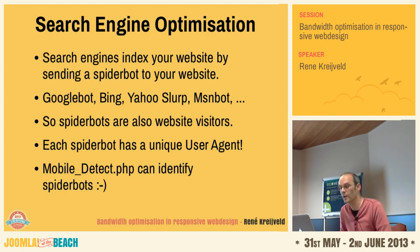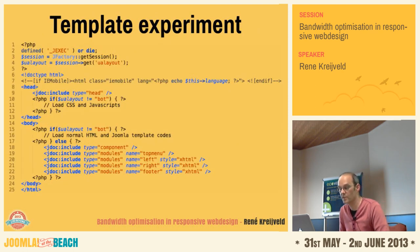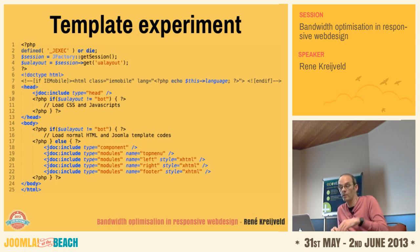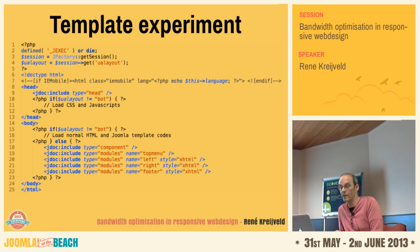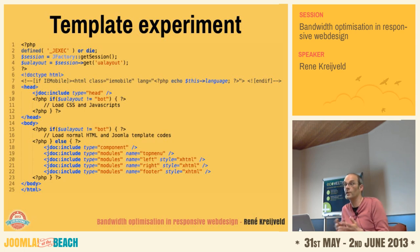This is an extraction of template code. At the top I set the session variable 'ua_layout'. At line 10, if the visiting user is a Googlebot or spider bot, I do not load CSS and JavaScript — normally I would, but not for bots. Then in the body at line 15, if the user layout is not a bot, I load all normal HTML and Joomla template code. But if it is a spider bot, I load all normal Joomla content — components and modules — but display it in a source-ordered manner, with the component first, then all modules.